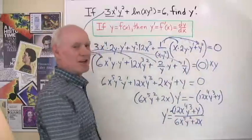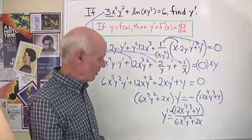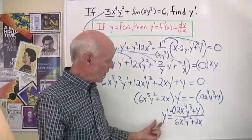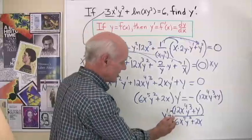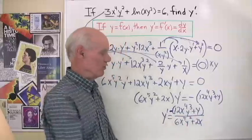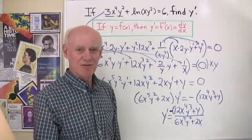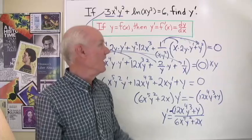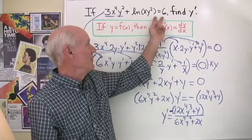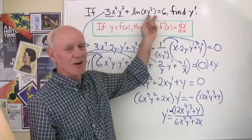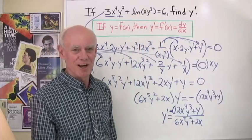After that, everything is algebra — just trying to get it in the form y prime equals something. And don't forget the negative sign in front of the whole numerator. So there's a look at implicit differentiation of a function involving a natural logarithm, the chain rule, and the product rule.